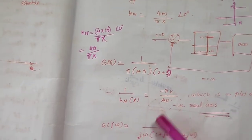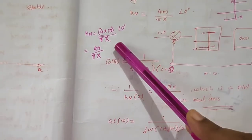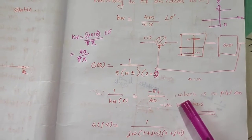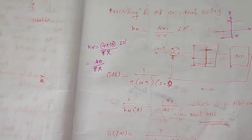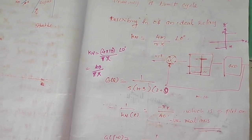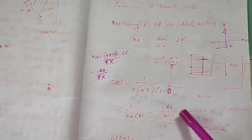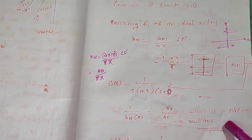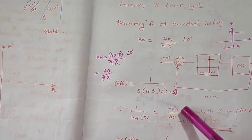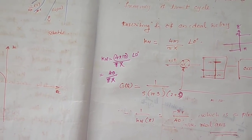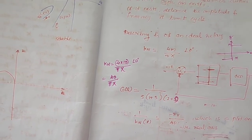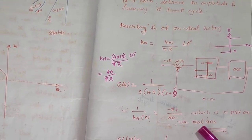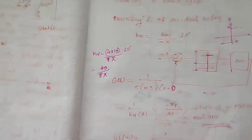Since the angle is 0, when we plot minus 1 by KN(x) for different values of X from 0 to infinity, we get only real negative values. When X = 0, the value is 0; when X = 1, it is −π/40; when X = 2, it is −2π/40; and so on. There are no complex or imaginary values — all values lie on the negative real axis.